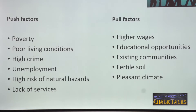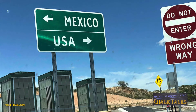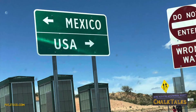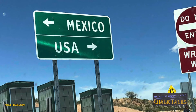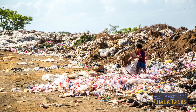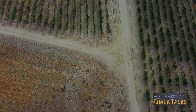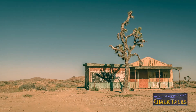An answer that simply lists these points wouldn't score highly, as you have to show a good knowledge of your case study. One case study for voluntary migration is migration from Mexico to the USA. To explain poverty as a push factor, you could say that many Mexican migrants come from poor rural areas where most people work in farming. Arid conditions and poor quality land make it difficult to make a living, resulting in 42% of Mexicans living in poverty in 2018.